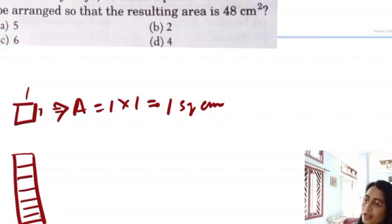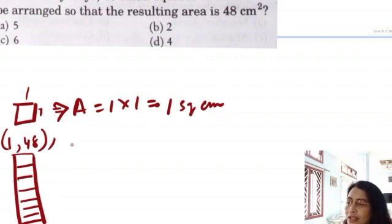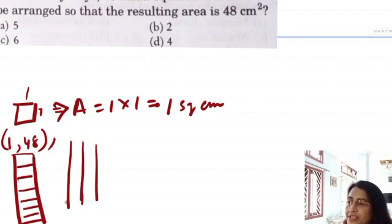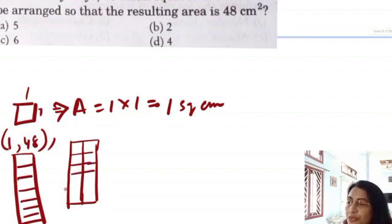So we accommodate 48 small squares with area 48 cm². One way is 1 column and 48 rows — that is a rectangular shape. The second way is 2 columns and 24 rows, since 2 × 24 = 48. The number of columns must be a divisor of 48.